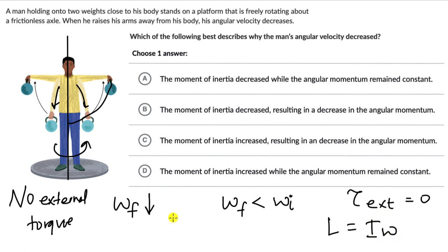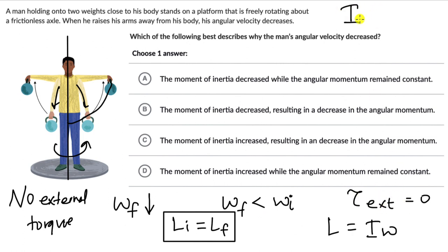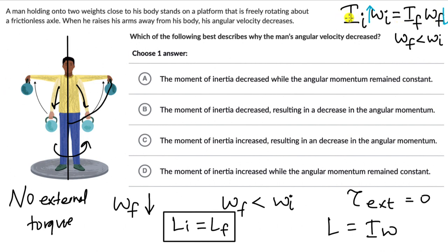Angular momentum is given by L = Iω, moment of inertia times angular velocity. Since the initial angular momentum equals the final angular momentum — because angular momentum is conserved — we have I_initial × ω_initial = I_final × ω_final. We know the angular velocity is decreasing, so ω_f < ω_i. For this equality to hold, the initial moment of inertia must be less than the final moment of inertia, meaning the moment of inertia increased while angular momentum remained constant.